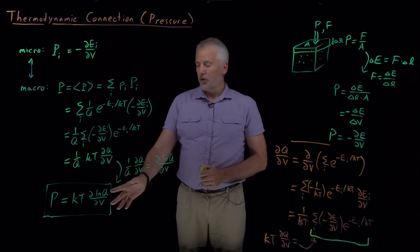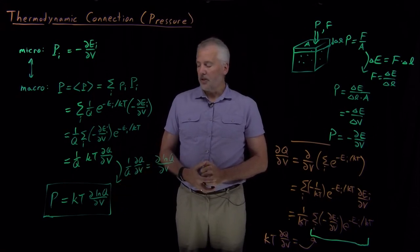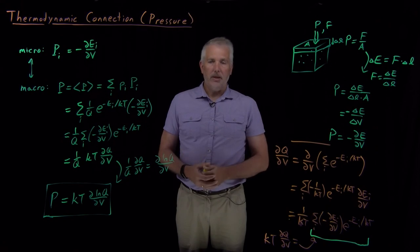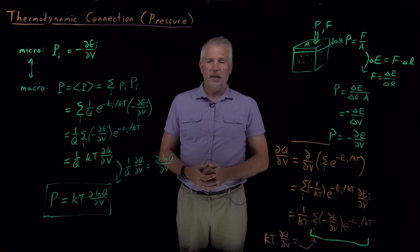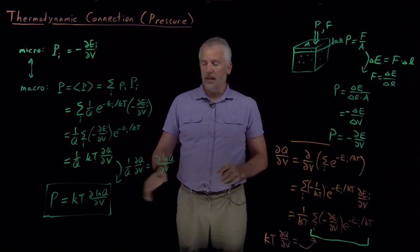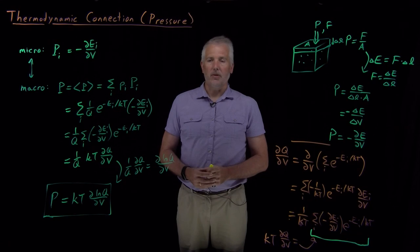We'll be able to apply that soon on a problem for which we can calculate the partition function precisely. We now have thermodynamic connection formulas for three different properties — energy, entropy, and pressure. We could continue calculating more, and we'll do that eventually. But now is a good time to move on and start applying these formulas, beginning with the particle in a box.